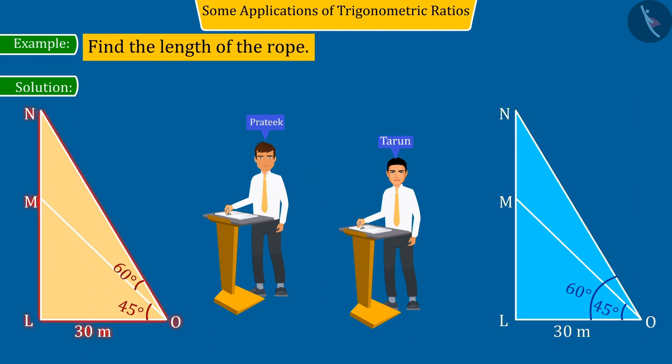If you consider the first figure to be correct, then your answer is wrong. Because Pratik has correctly marked the elevation angle M, O, L equal to 45 degrees on the third floor. But he has incorrectly marked the elevation angle of the fifth floor.